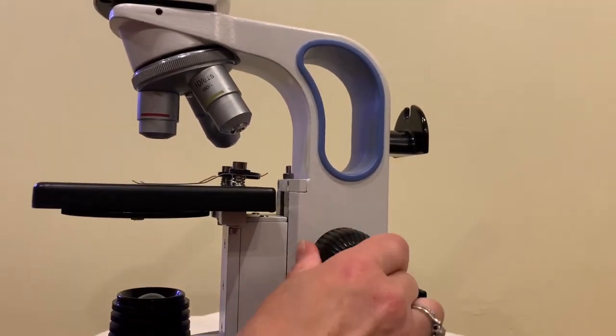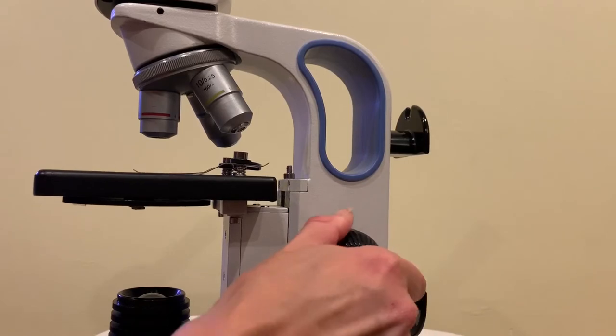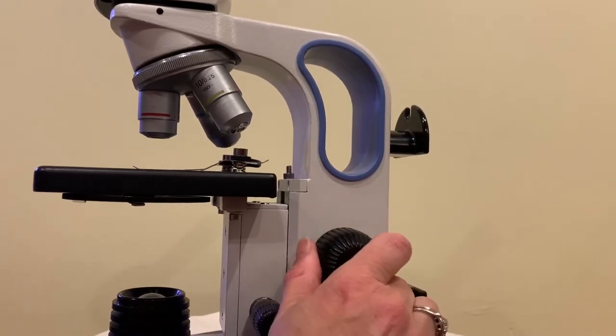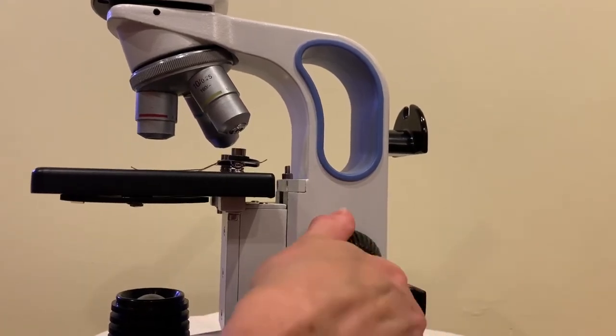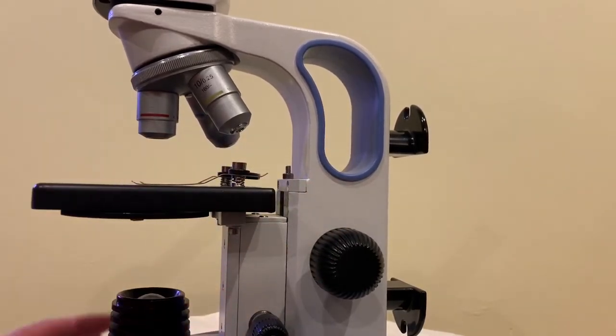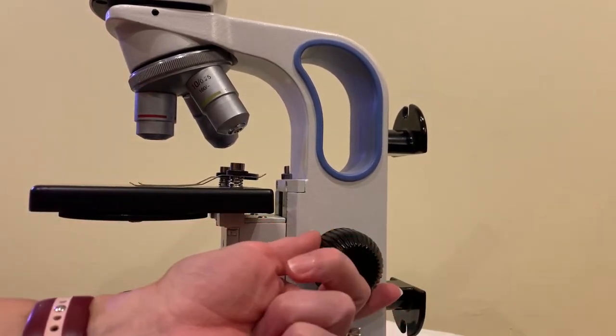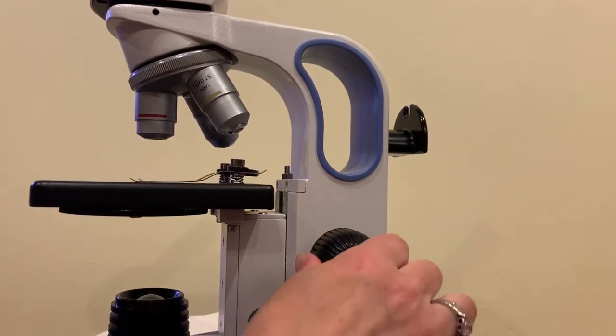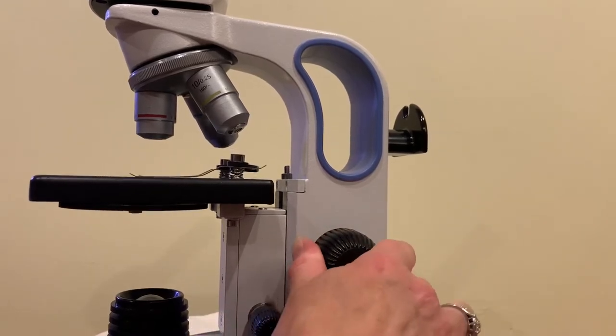Now we come to the coarse focus knob. So what do you notice is happening when I turn the coarse focus knob? Very good. The stage is moving up and down and it's moving up and down quite a lot. When you first put your slide on the stage and you've turned the microscope on and you're on the lowest magnification, in order to bring your sample into focus you are going to use the coarse focus knob. So you're going to turn it until whatever you're looking at comes into focus.